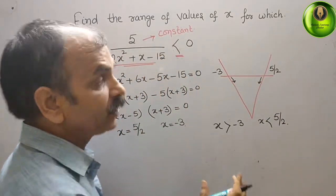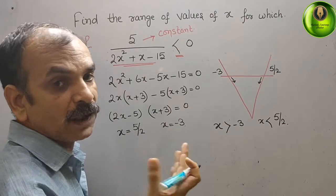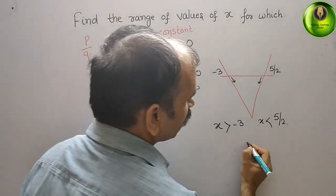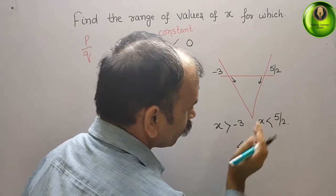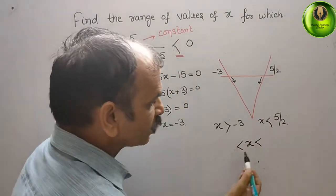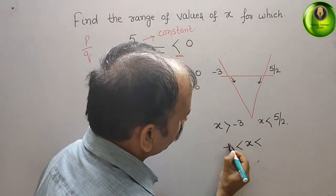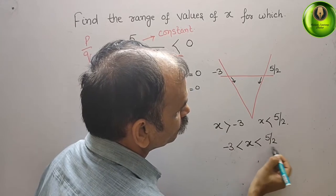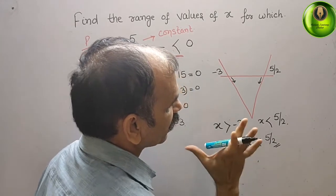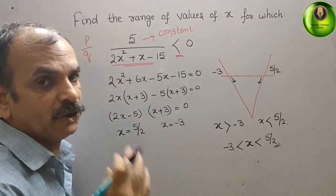Now go for the range. They have asked to find the range of the value, so we have to go for the range. What is your range now? x should be greater than -3 here, and here it comes 5/2. So therefore this is the range. From -3 to 5/2 is your range.